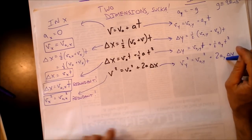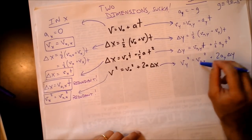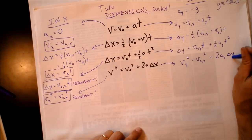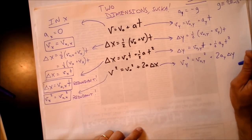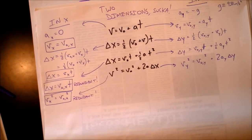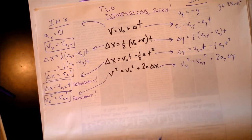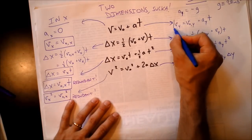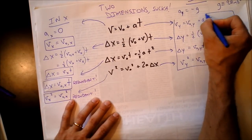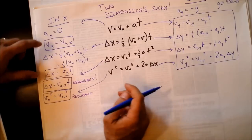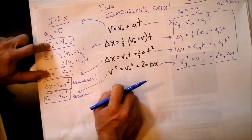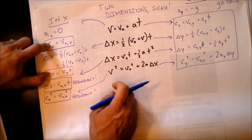The tale of two squares is the hardest to remember because it has delta y rather than delta t. We'll talk in another video about how to know which variable to use. So these are the four kinematic equations in the y direction, and there are only two kinematic equations you need in the x direction.